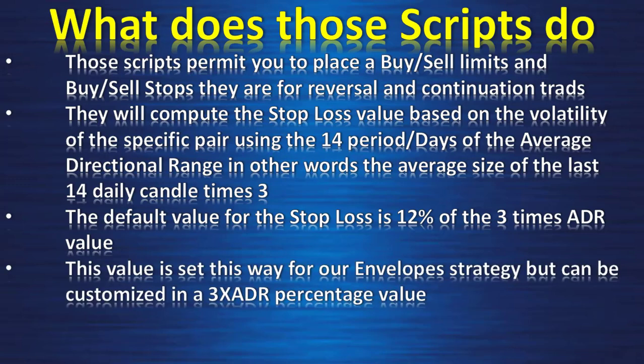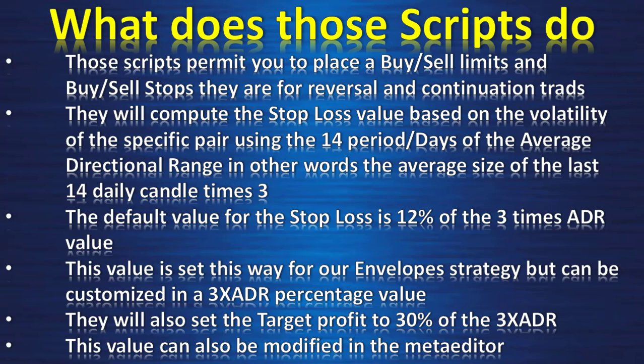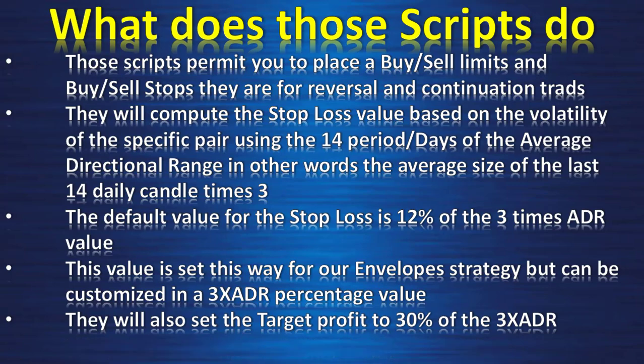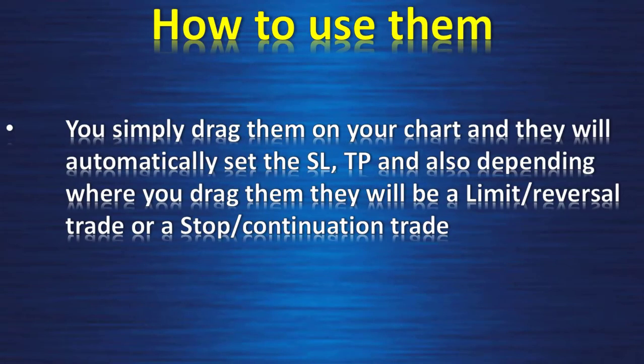The default value for the stop loss is 12% of the 3x ADR. This value is set this way for our envelope strategy but can be customized as a 3x ADR percentage. They will also set the target profit to 30% of the 3x ADR, which can also be modified in the Meta Editor. Additionally, those scripts set an expiration — they will be cancelled every day at 11 PM on the daily candle time.